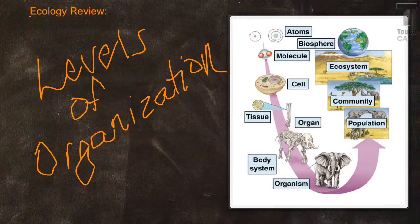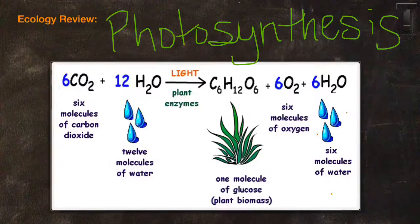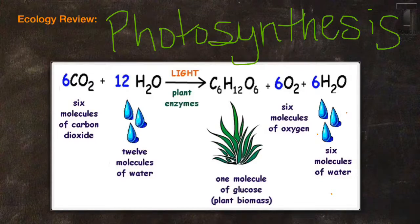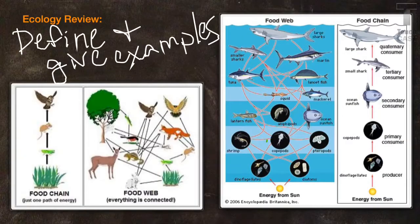Make sure you remember the levels of organization. Review the process of photosynthesis and what is included when photosynthesis takes place. Be able to define and give examples of a food chain or a food web.